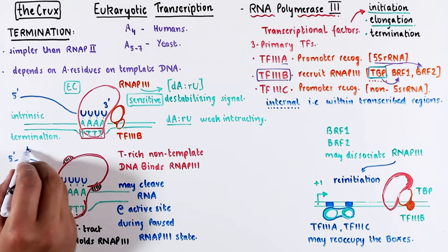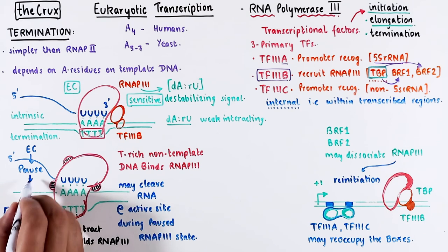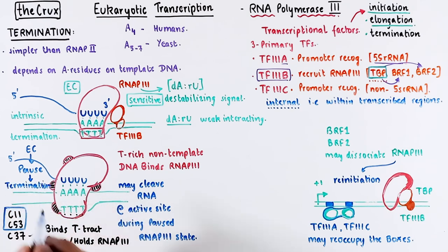So, in essence, you can think of elongation complex pausing at the A-U hybrid, with certain subunits of the polymerase finally then coming together to cleave the RNA and then terminate transcription. This concept of DNA latching represents a somewhat more detailed perspective on the intrinsic style termination of RNA polymerase 3.